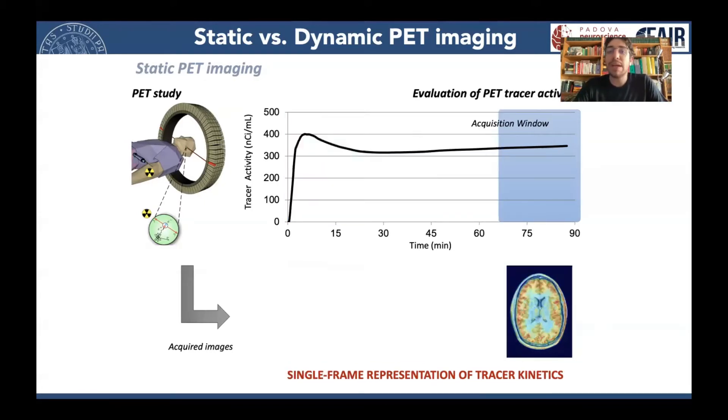Or, which is usually what is done in the clinical setting, we can decide to acquire a single snapshot, a static PET image, usually at the end of the experiment, around 30 or 40 minutes post injection, having therefore a single frame representation of the uptake of FDG in that subject. And today we are going to try to understand why we can choose to make one of these choices.